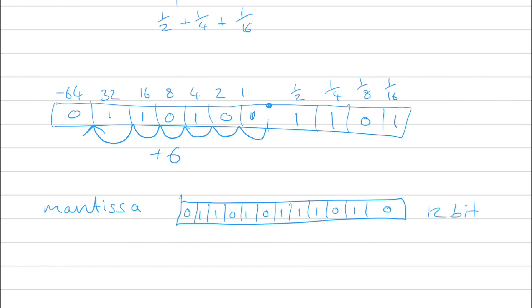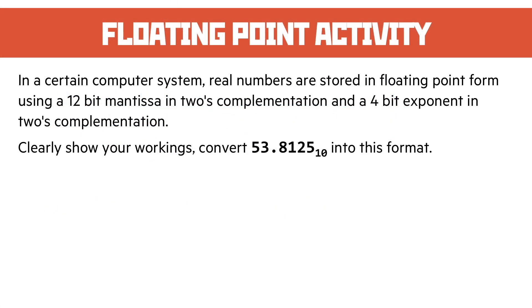The exponent then we need to represent plus six. It's told us there's a four-bit exponent. So we need to use that with two's complementation to represent the number six, and that's done in that way. And there's our answer as to how we represent that in floating point form.